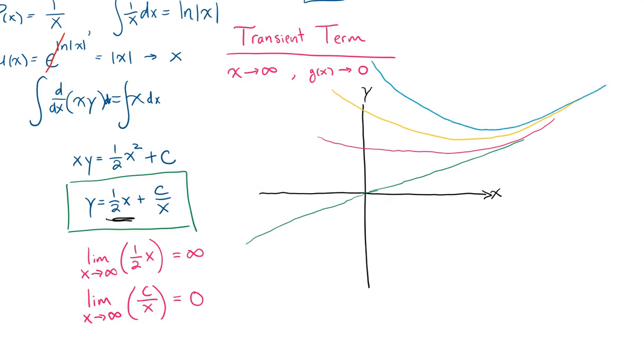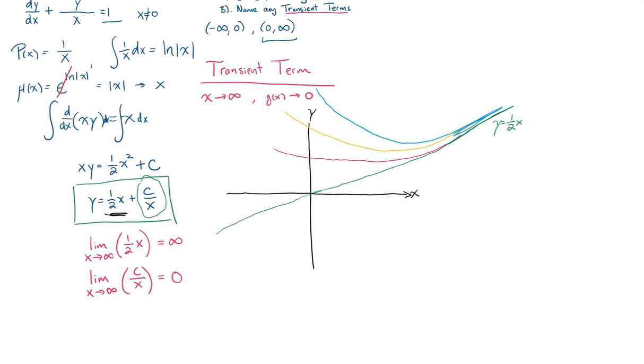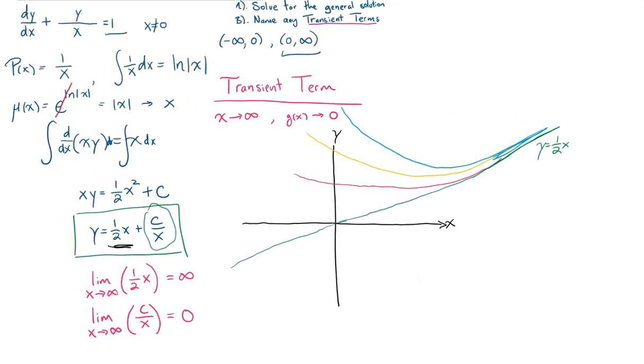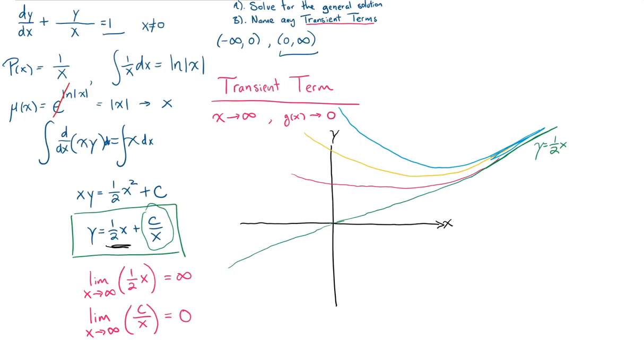But as they approach, or rather, as x increases towards infinity, all of our solutions, and we can see right here, they are going to look more and more like y equals 1 half x. And that's because we have this last term, which is a transient term, which is disappearing. So recognizing that we have a transient term, we can immediately gain a much better picture in our head of what these solutions to the differential equations are doing, how they are acting as x approaches infinity.